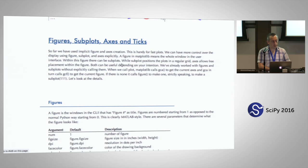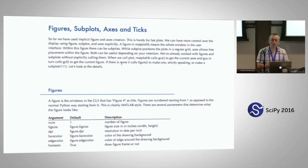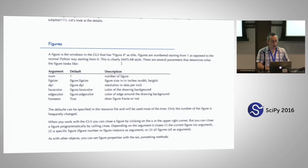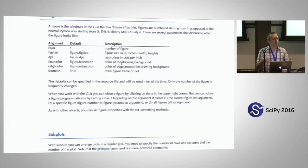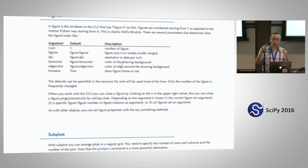Now let's look at a more global overview of Matplotlib. The most important concepts we've been using are figure and subplots. So far we've only used one subplot. When you create a figure — think of it as a window — inside that window you can put plots, called subplots. For our exercise we used one window with one plot covering the whole area.